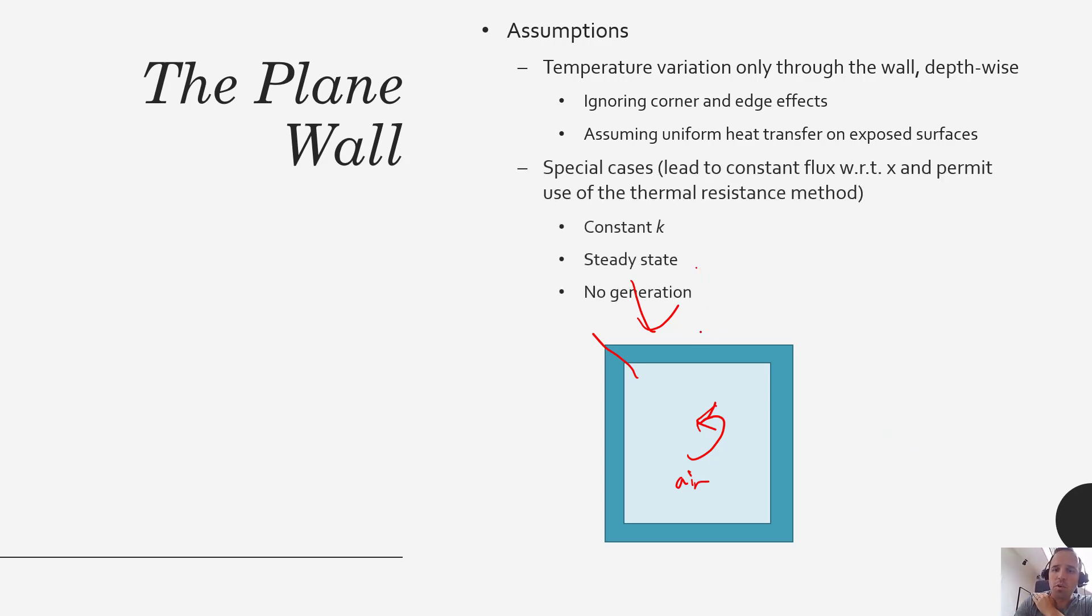When we talk about plane walls, a lot of the analysis we're going to do is going to use these following assumptions. We're going to assume that you have a constant thermal conductivity, that your thermal conductivity doesn't vary as a function of temperature or as a function of distance. We're also going to assume that our systems are at steady state.